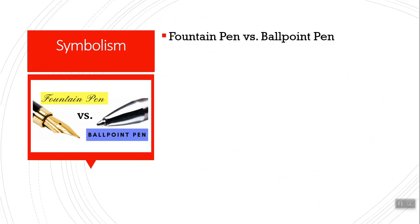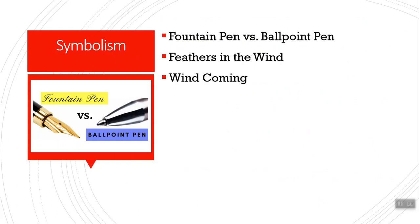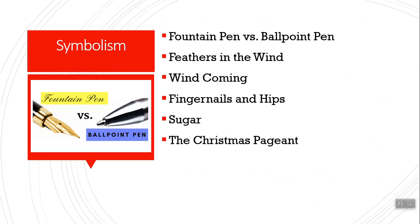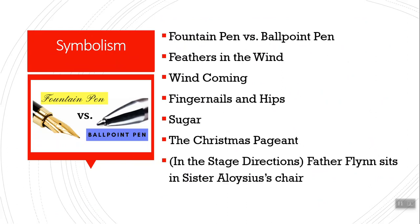Symbolism — some things to watch for: the ballpoint pen versus the fountain pen. Ballpoint pens are more modern; fountain pens are more traditional. Father Flynn gives a sermon with a metaphor about feathers in the wind — think about what those represent. The wind is often mentioned, like winds of change, a phrase often used in the 60s. Look for Father Flynn talking about fingernails and loose hips and think about what that might mean. There's a very tense debate about sugar. The Christmas pageant — traditional things versus more modern things. And in the stage directions, Father Flynn sits in Sister Aloysius' chair — notice that moment, it really epitomizes conflict. Make sure you read the stage directions throughout this whole play.